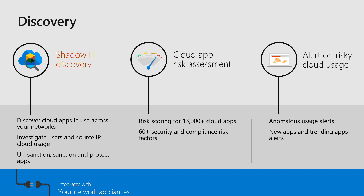The last discovery feature is alerts on risky activities. You can configure alerts in Cloud App Security for when users perform risky activities — for example, if a user has unexpected travel from one location to another within five minutes, which is not physically possible, it generates an alert. Or if a user is trying to download from SharePoint or OneDrive from an IP address from which they have never logged into 365 before.